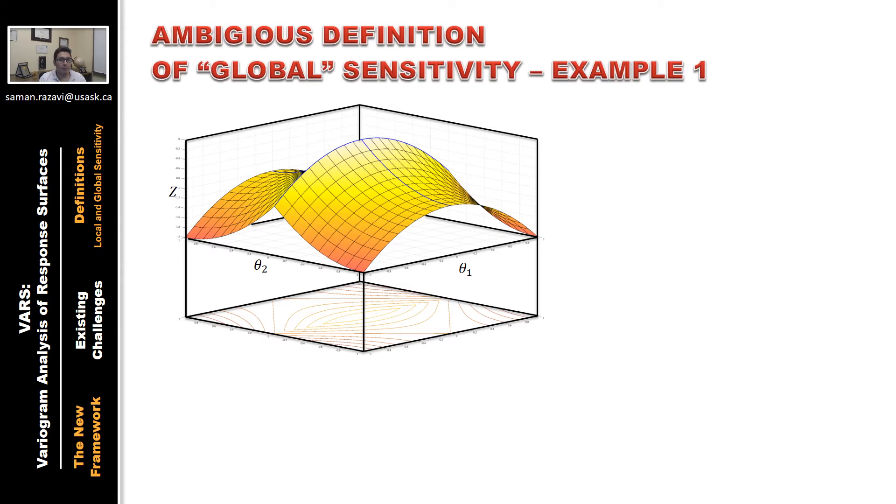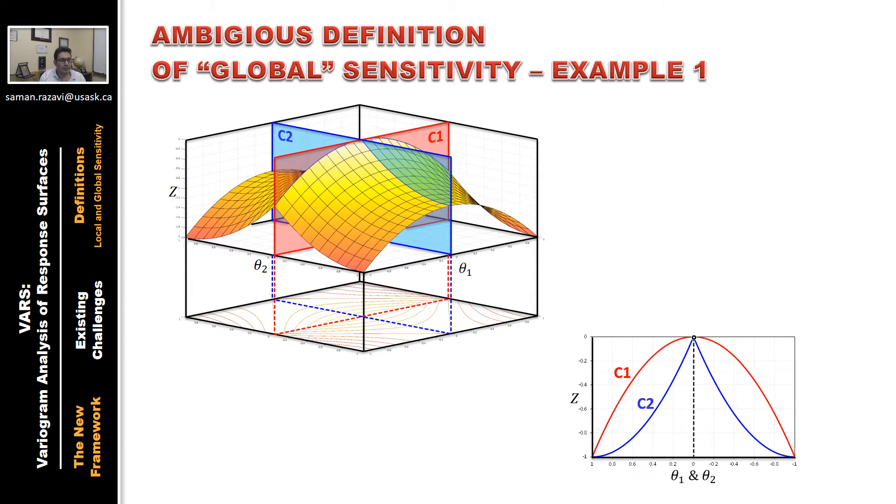To explain what I mean by ambiguous definition of global sensitivity and how we have addressed it, I'm giving two examples. Suppose we have a response surface with this cartoony form. In one direction, you have a nice quadratic form. And the other direction, you have a piecewise function with two flipped parts of the previous function. Sharp. On the right, you see two cross sections of the response surface.